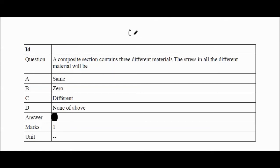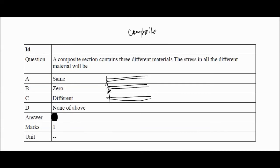A composite section contains three different materials — for example steel, aluminium, and brass. Even if the areas of all three are the same, if the members are in parallel, the elongation in all three sections will be the same, but the stress will be different in each material.